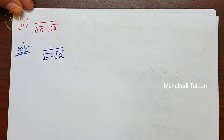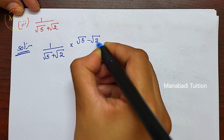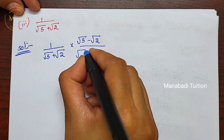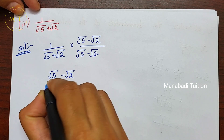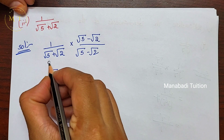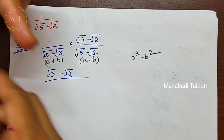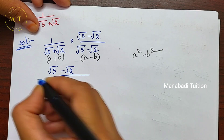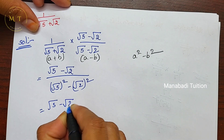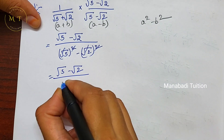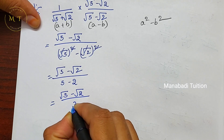Third part: 1 by (root 5 plus root 2). Multiply numerator and denominator by (root 5 minus root 2). Using (a plus b)(a minus b) equals a squared minus b squared, the denominator becomes 5 minus 2 equals 3. So the answer is (root 5 minus root 2) divided by 3.